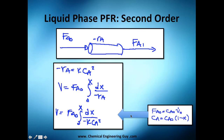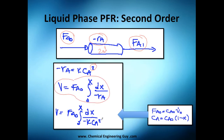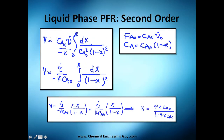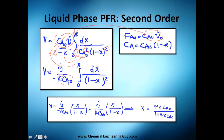Now for second order PFR in liquid phase — same inlet, outlet, and reaction setup, but this time the rate is second order, meaning it depends on concentration squared: −r_A = k·C_A². The volume equation follows exactly the same process, but I substitute the concentration squared. I change concentration into conversion, so I have (1 − X) squared in the denominator. The k and the initial concentration squared C_A0² come out of the integral, so the result now depends explicitly on the initial concentration.